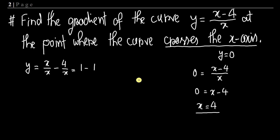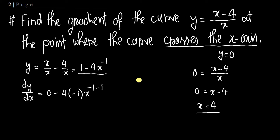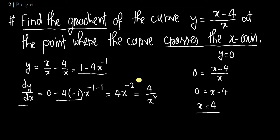Now we differentiate. dy/dx: the derivative of 1 is 0, and from minus 4x to the power minus 1, applying the power rule gives minus 4 times minus 1 times x to the power minus 2, which is positive 4x to the power negative 2, or 4 divided by x squared. Now we substitute x equals 4 into the expression: 4 divided by 4 squared.